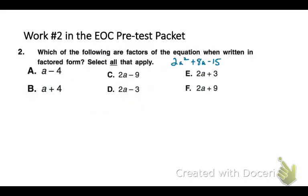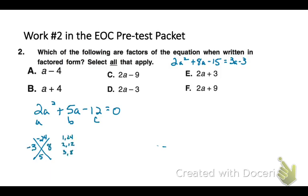Now go to number 2 in your EOC pretest packet. We're going to find all the factors of this quadratic. So the first thing we need to do is to move everything over to the left side of the equal sign. So I need to subtract my 3a and add my 3. And then I'm looking for numbers that multiply to give me negative 24 and combine to give me 5. So I go through factors of 24 and I stop at 3 and 8. I realize if my 3 is negative and I add those, I will get positive 5.